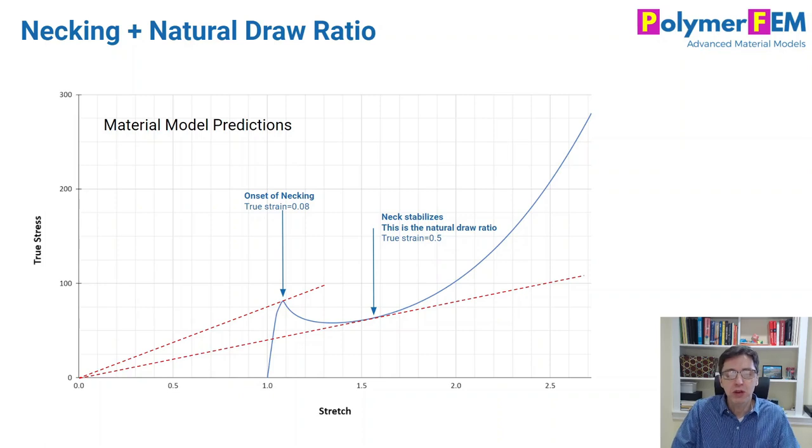The strain inside the gauge section as it undergoes this necking phenomenon and before the two fronts reach the end of the specimen, that's called the natural draw ratio. In this case, it's around 0.5 to 0.7 in strain here.